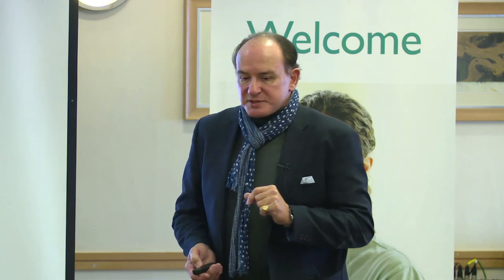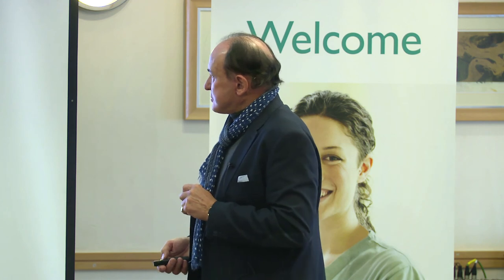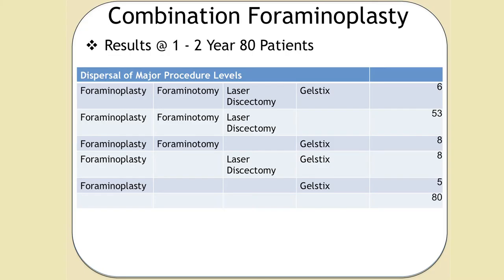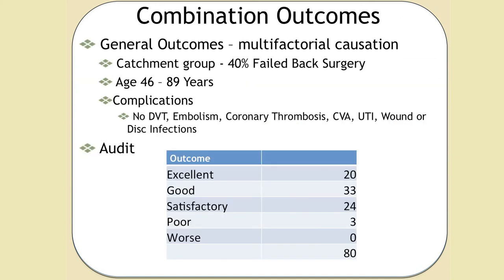For combination therapy, at the prime level for pain production we perform foraminoplasty; at the next level a more limited endoscopic foraminotomy; at a third level laser discectomy or annuloplasty; and at a fourth level perhaps insert gel sticks. We're now able to treat some quite horrendous spines. In a survey of 80 patients over the last two years — 40% failed back surgery, age range 46 to 89, no DVTs or standard complications — 20 were completely pain free, 33 had a good result, 24 were satisfactory, 3 were poor, and none were worse.